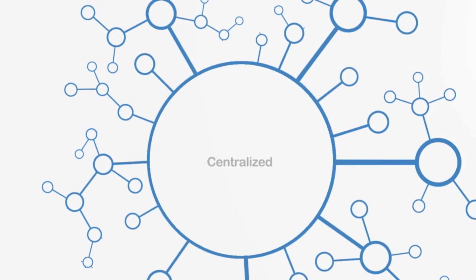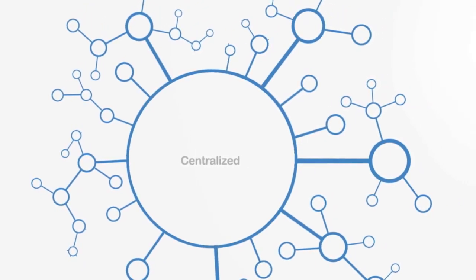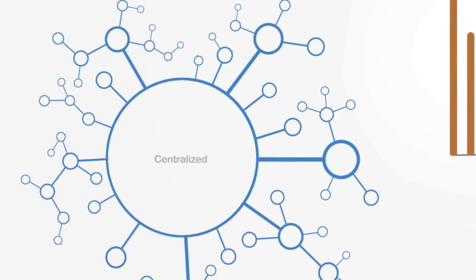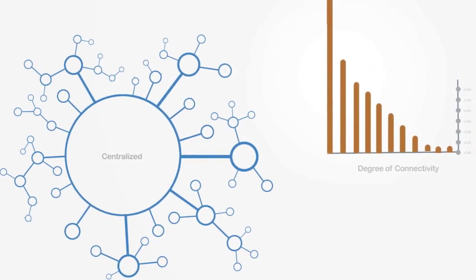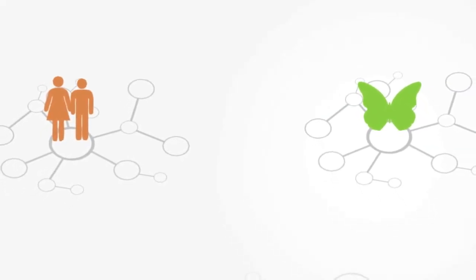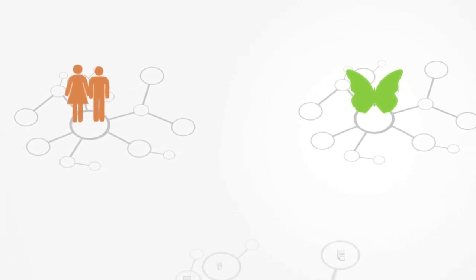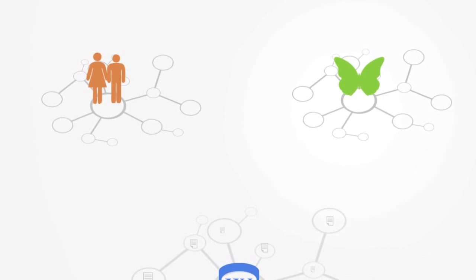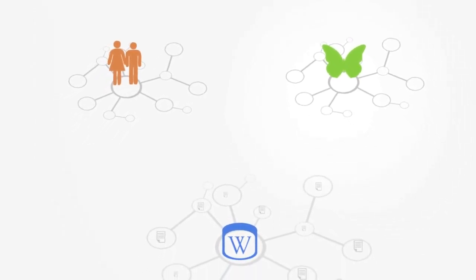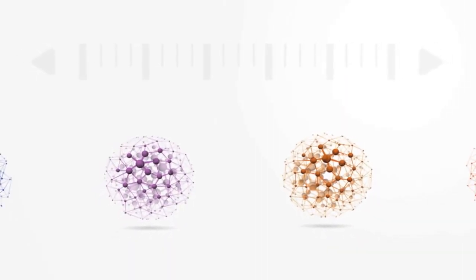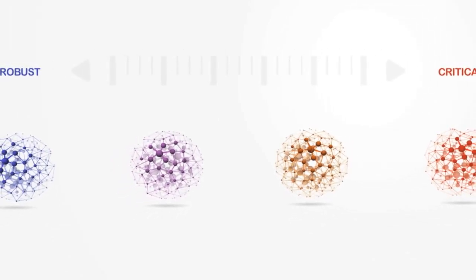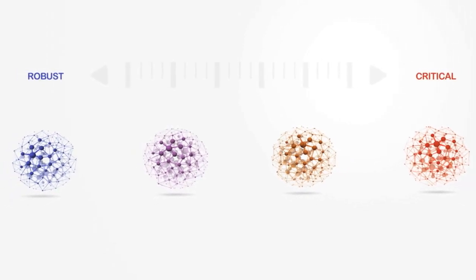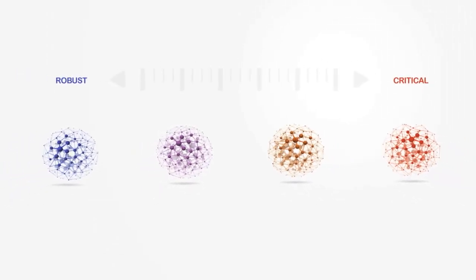Lastly, we have more centralized networks called scale-free networks. This is where many nodes have chosen to connect to the same node, giving a degree of connectivity that greatly exceeds the average, whilst leaving many with a very low level of connectivity. Many real-world networks are thought to be scale-free, including social, biological and technological systems such as the World Wide Web, where very few websites like Wikipedia have a very large amount of links into them, whilst the vast majority have very few. These various types of network structures give rise to different properties. A key question is how robust or fragile a particular type of network is, as this will be of great significance in how we design and manage them.